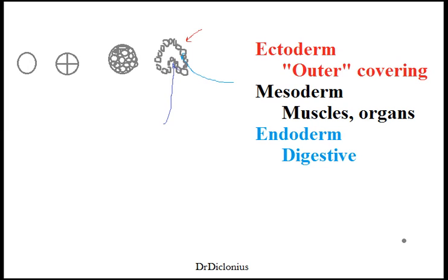Today let's talk a little bit about the origin of tissues, more specifically the ectoderm, mesoderm, and endoderm. Let's first back up a little bit and start with the zygote — this is after fertilization right here.